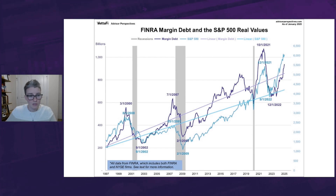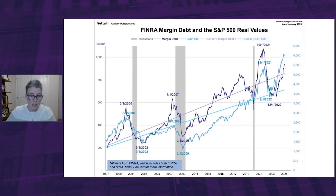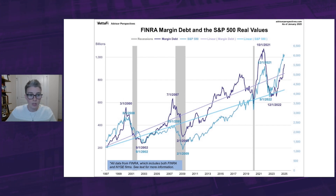A similar surge followed the COVID pandemic, with margin debt peaking in October 2021, two months before the market's December high. The most recent surge has been occurring over the past 15 months, where the market hit its real all-time high just a few months ago in November 2024. With that said, real margin debt has increased for five straight months and seems to be on an upward climb.